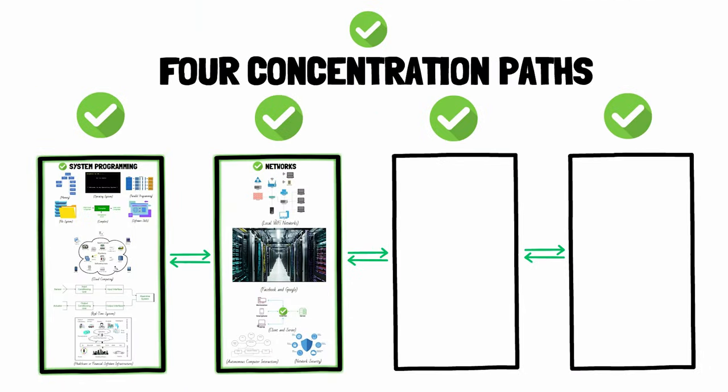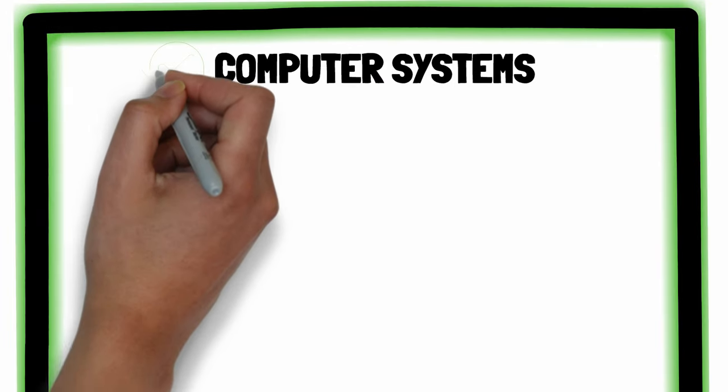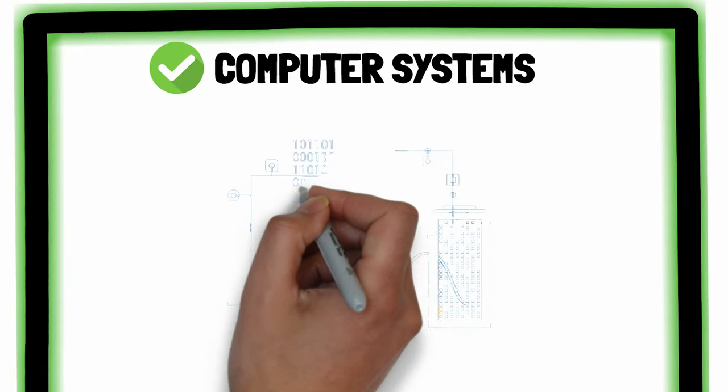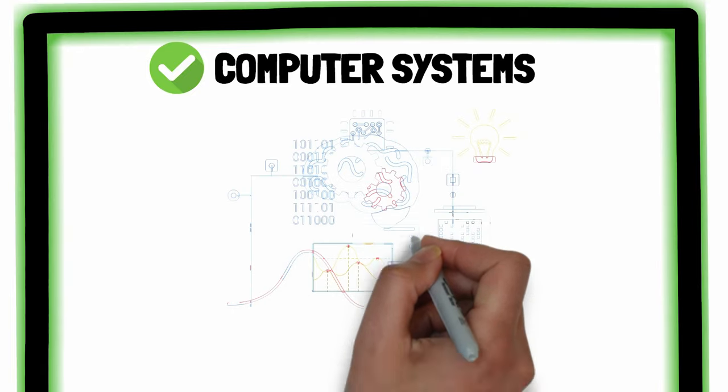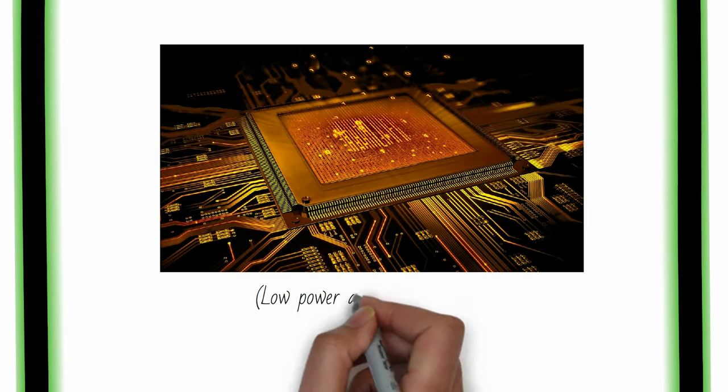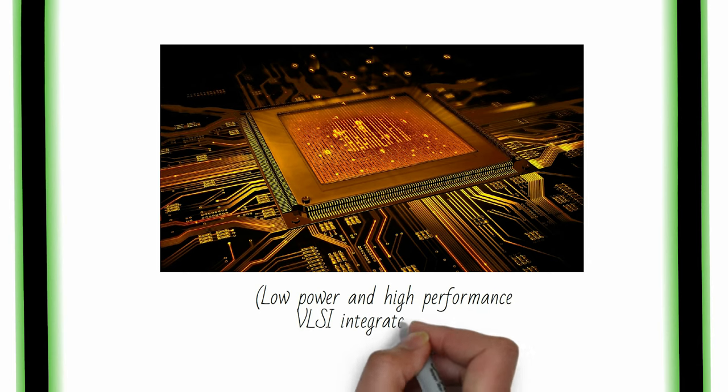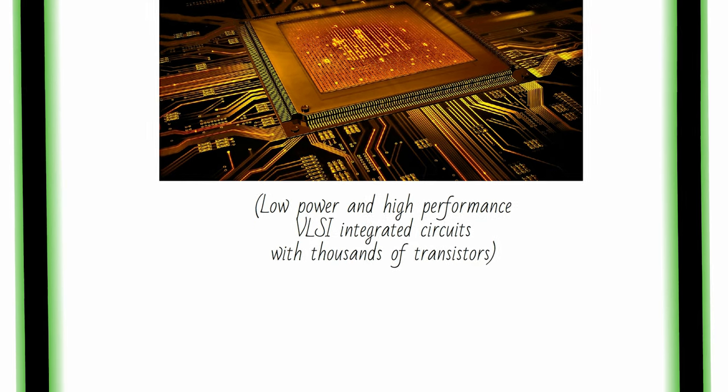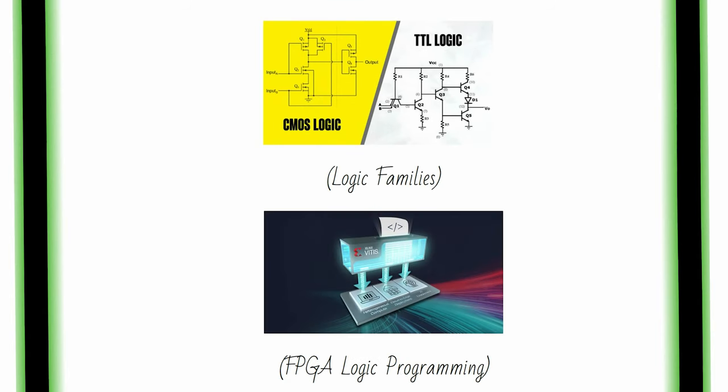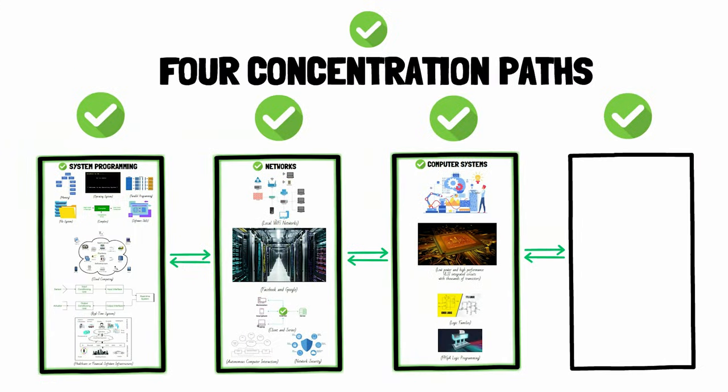Now, the third concentration is called the Computer Systems Concentration, which starts getting into some hardware. This one is similar to the first systems programming track in the sense that you become adept with all types of computer systems, but you trade some of the software skills for hardware know-how. You'll learn everything about low-power and high-performance VLSI-integrated circuits with thousands of transistors. You'll also learn different types of logic families and further FPGA logic programming for those who really like logic.